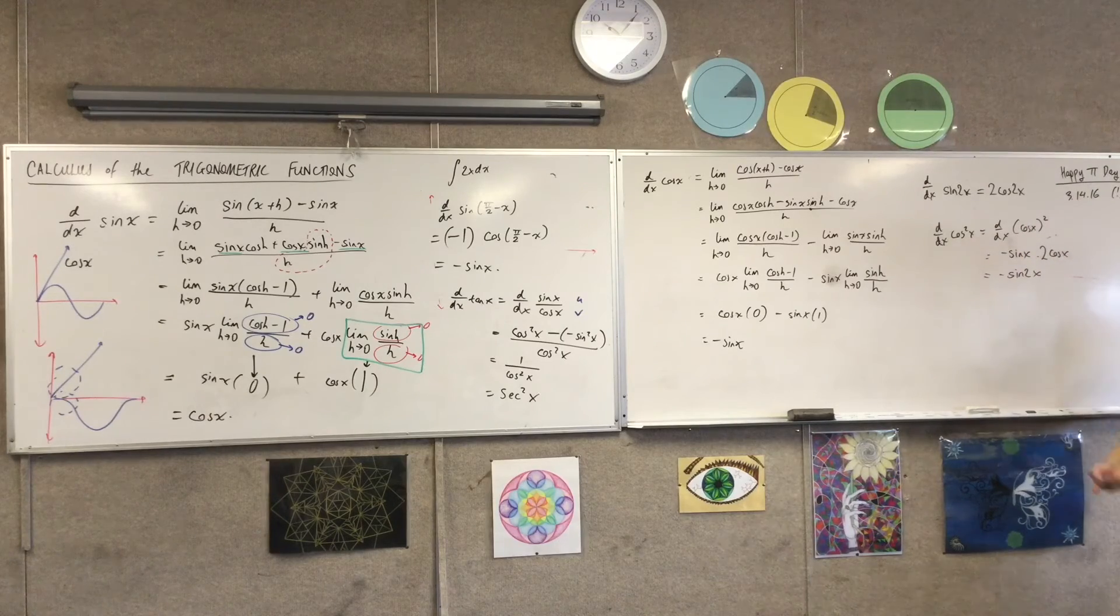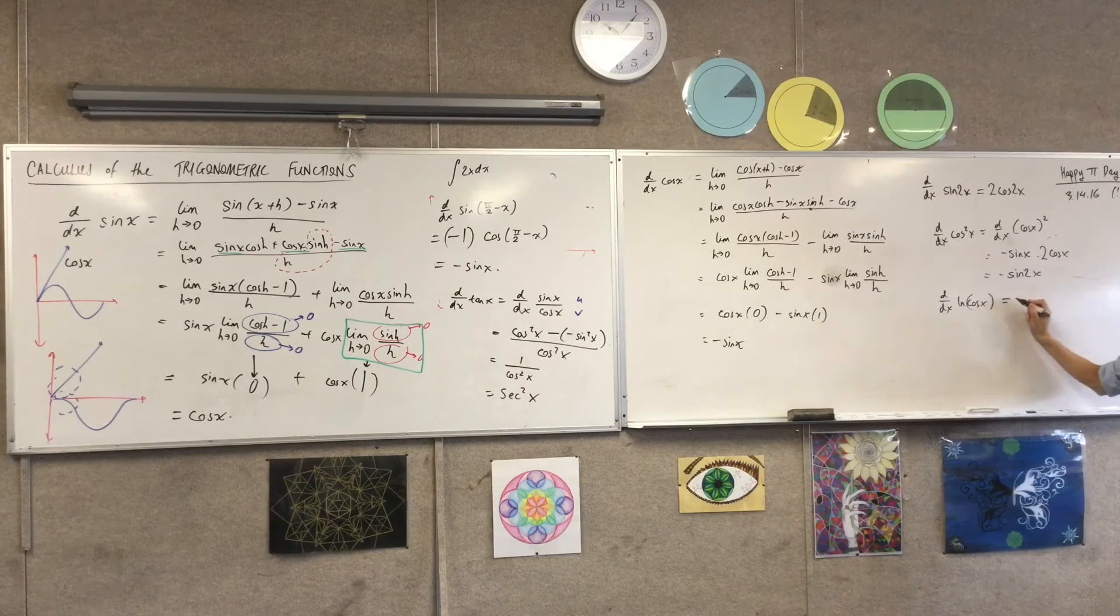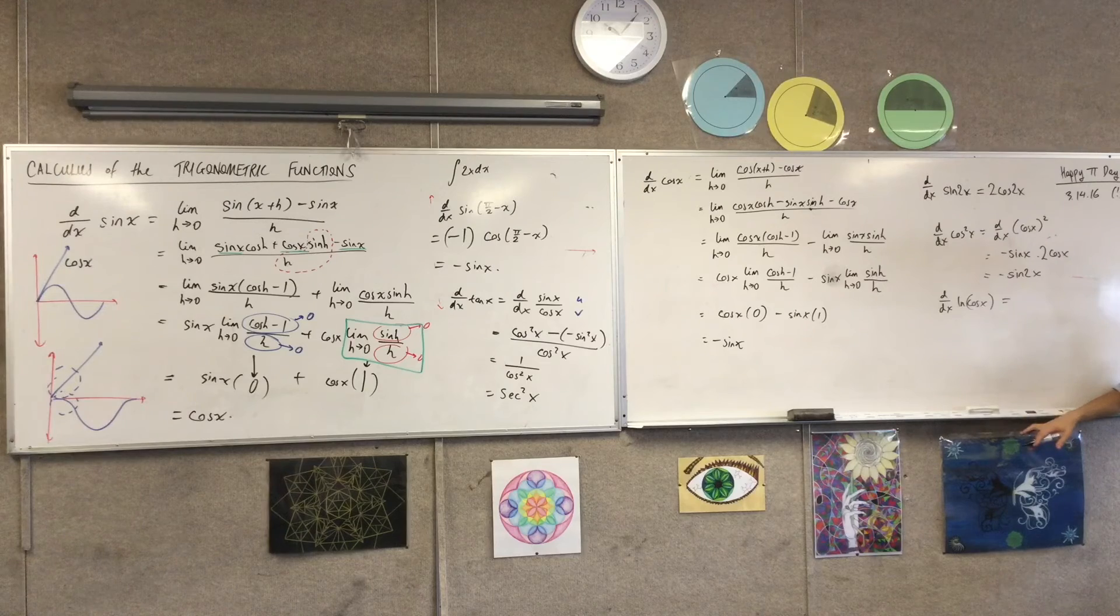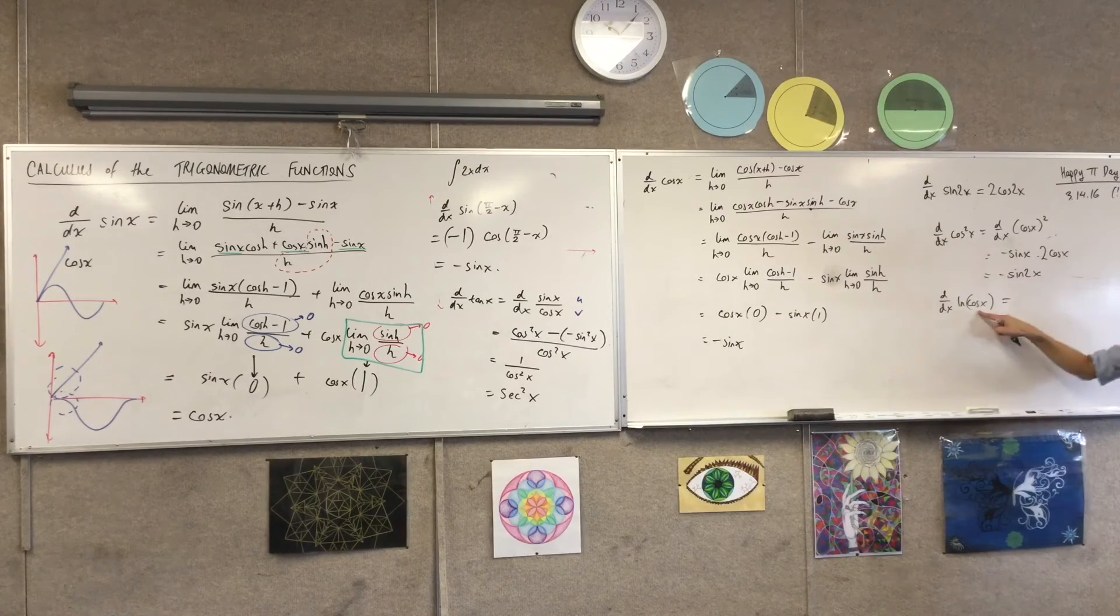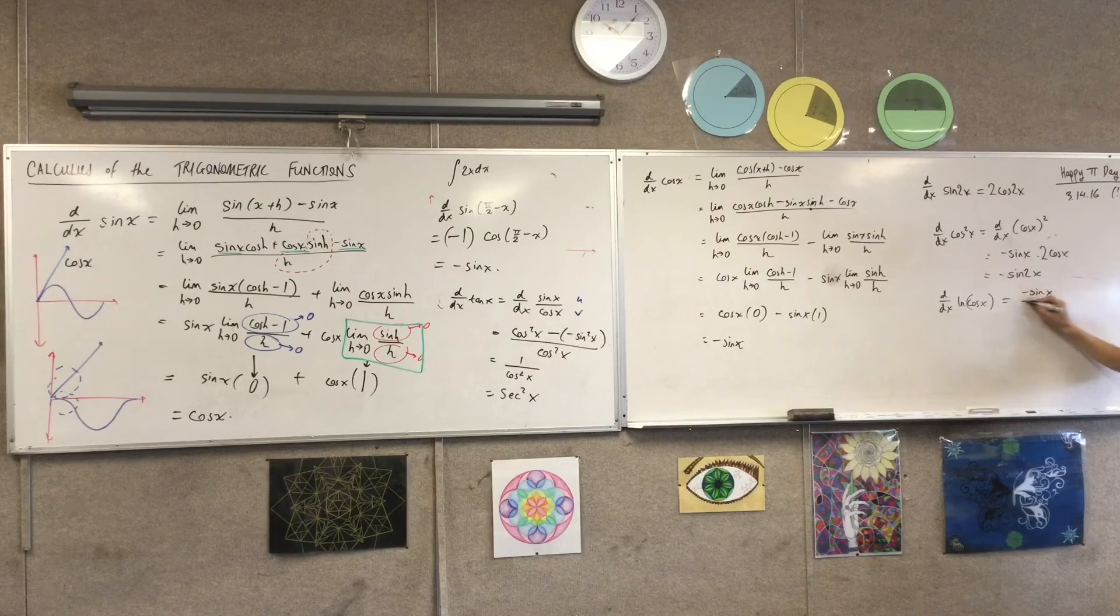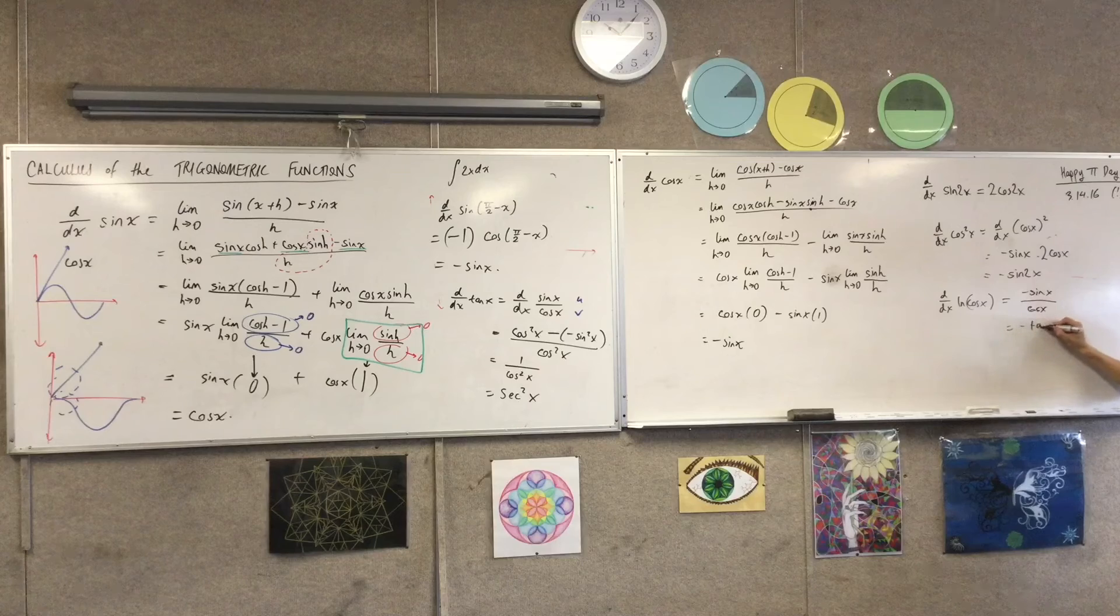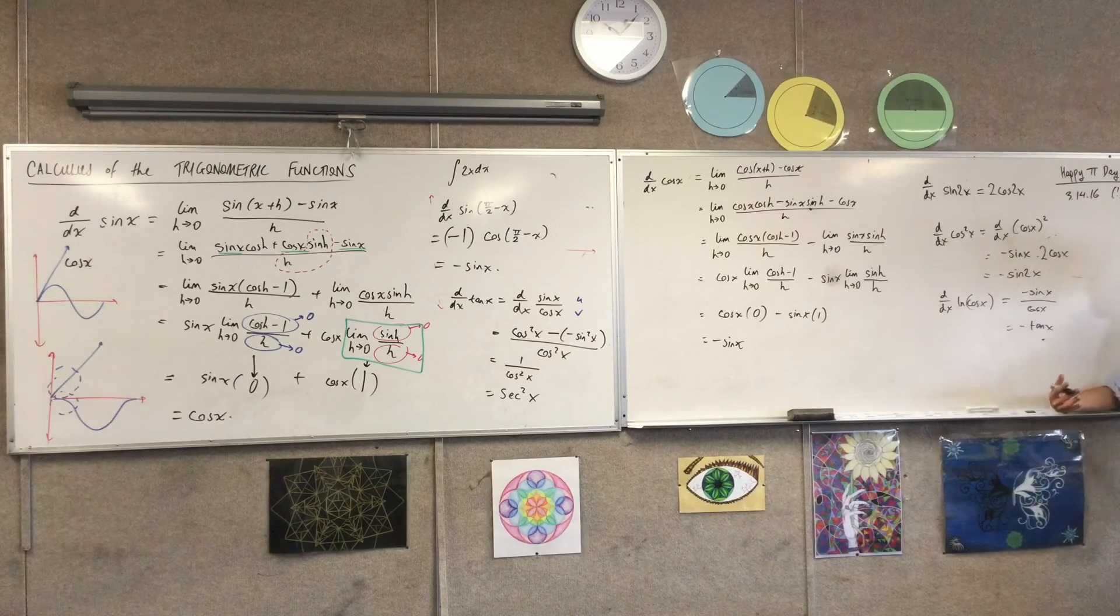So I can keep on doing this. I could do, here's an interesting one. How about this one? What? F dash on F, right? F dash on F, what's F dash? Minus sine. What's F? It's that. So that's this. And I could do this for a long time, right?